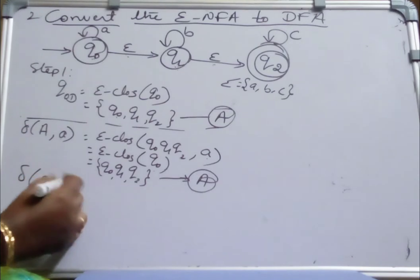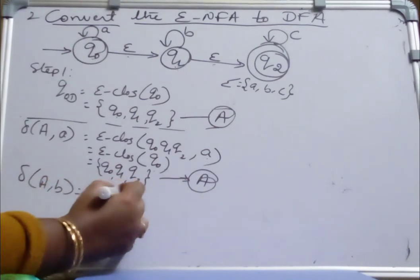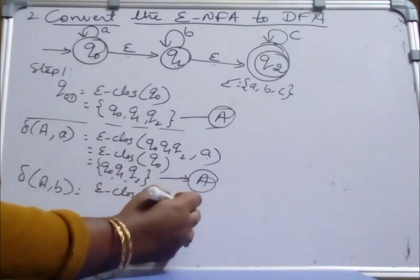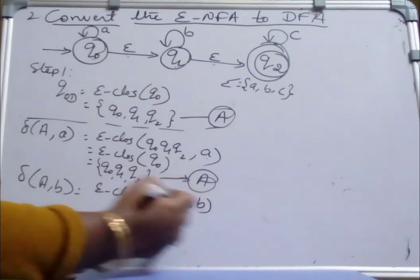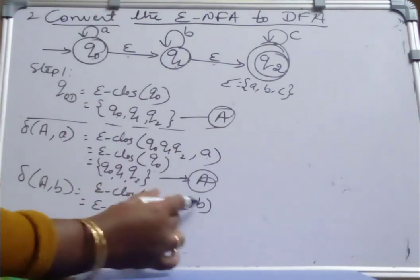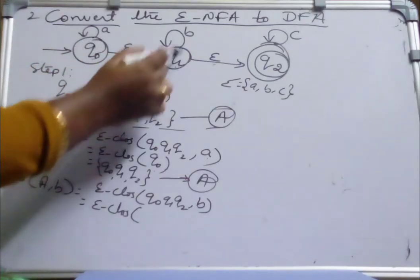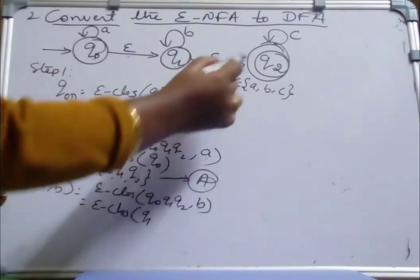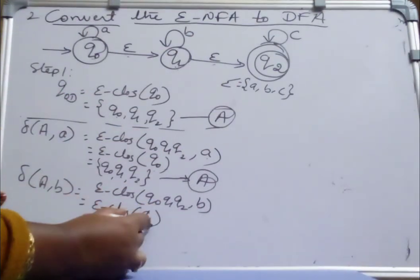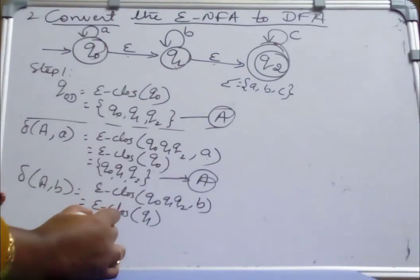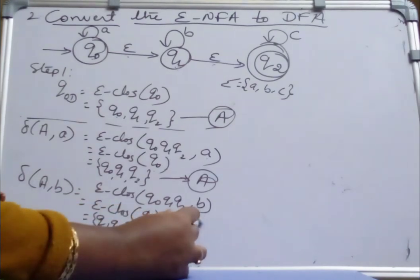Find transition of A on b, which equals Epsilon closure of {Q0, Q1, Q2} on b. Q0 on b has no transition; Q1 on b it is going to Q1 itself; Q2 on b has no transition. So we get Epsilon closure of Q1, which is {Q1, Q2}. This is a new state — name this state as B.